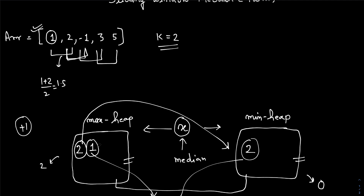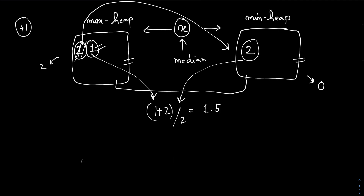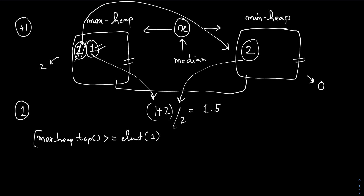Now we have to find the median of the next two elements, but we have 1 in the max heap. How can we remove this 1 from the heap? We need to check whether the element is present in the max heap or the min heap. To remove 1, I'll check the max heap's top element — if it's greater than or equal to the element, then it's present in the max heap and I remove it from there; otherwise it's in the min heap and I remove it from there. I found it's in the max heap, so I remove it. Now the max heap is empty.